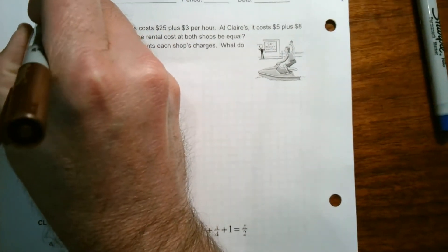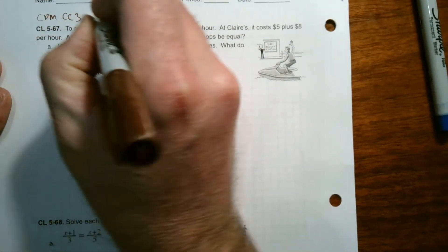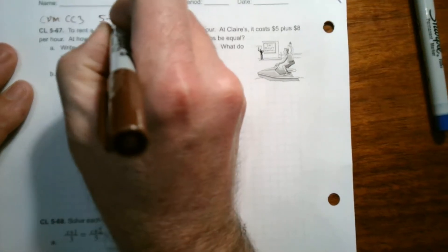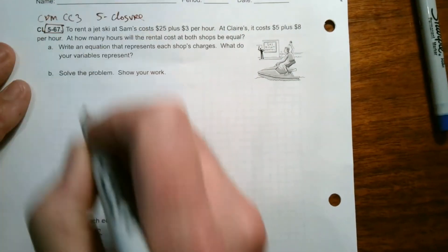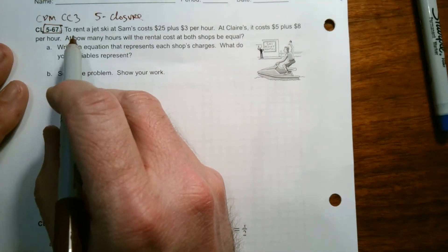So we've got, this is coming from CPM's course three, and this is chapter five closure. And this is specifically five dash 67. So I'll read it and go through it.